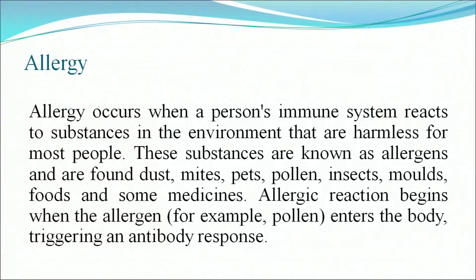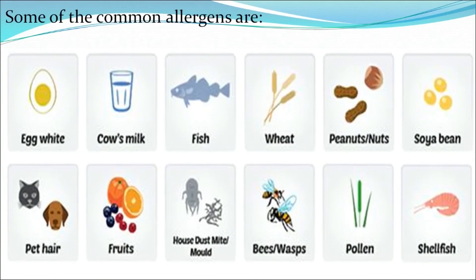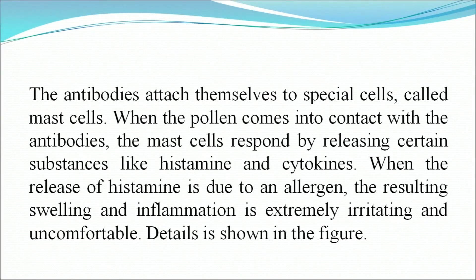We have talked about pesticides, fertilizers, chemicals and heavy metals as environmental hazards. Before concluding, allergens should also be mentioned. Allergy occurs when a person's immune system reacts to substances in the environment that are harmless for most people — these substances are known as allergens and are found in dust, mites, pets, pollen, insects, moulds, food and some medicines. An allergic reaction begins when the allergen enters the body, triggering an antibody response. The antibodies attach to mast cells; when the allergen contacts the antibodies, the mast cells respond by releasing histamines and cytokines, causing swelling and inflammation that is extremely irritating and uncomfortable.